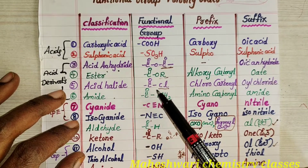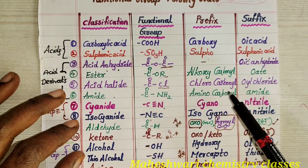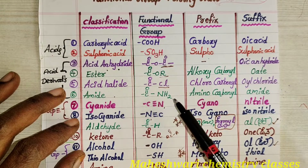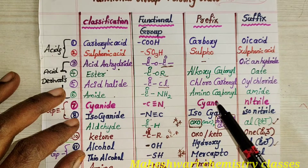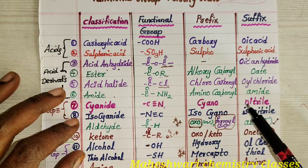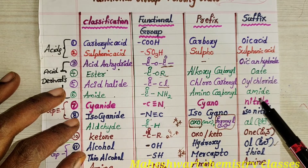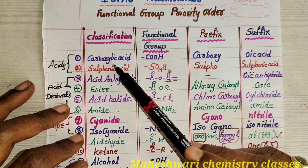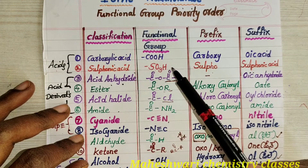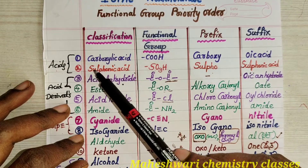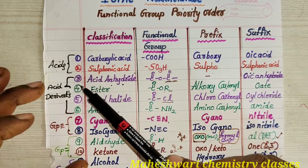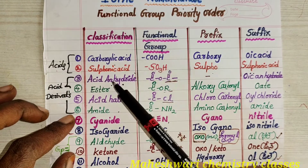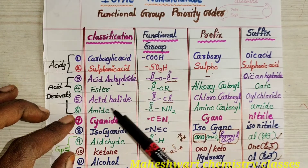Acid halide (C=O bond Cl): prefix is chlorocarbonyl, suffix is oyl chloride. Amide (C=O bond NH2): prefix is aminocarbonyl, suffix is amide. Carboxylic acid and sulphonic acids are the acids. All these others — anhydride, ester, acid halide, amide — are the carboxylic acid derivatives.